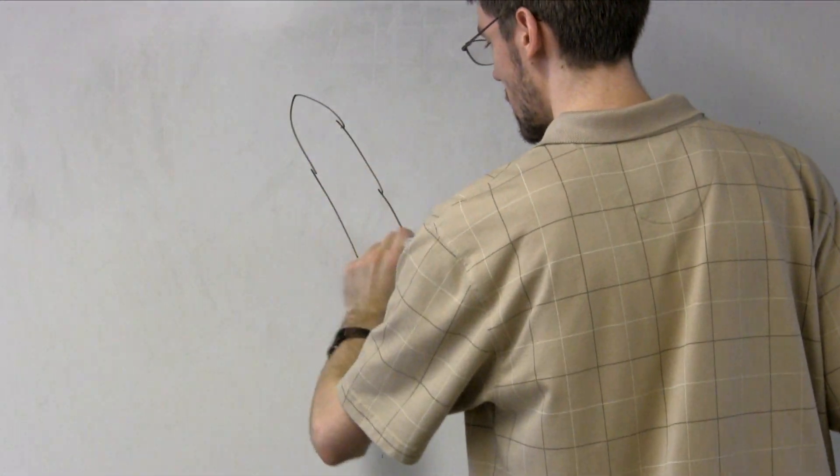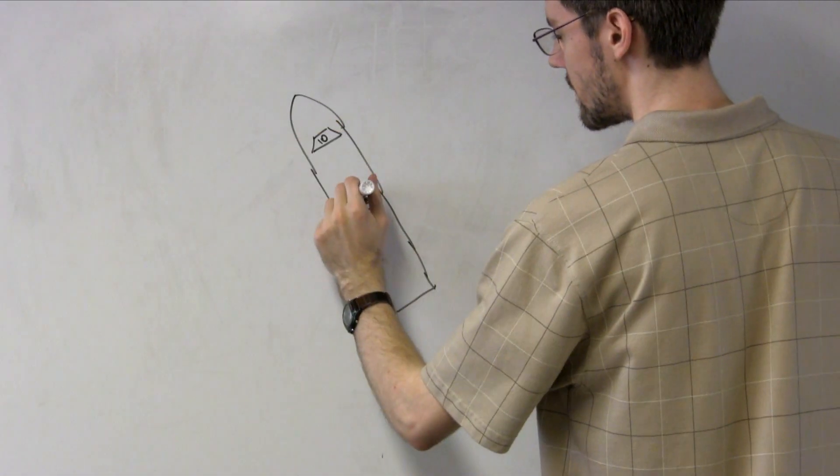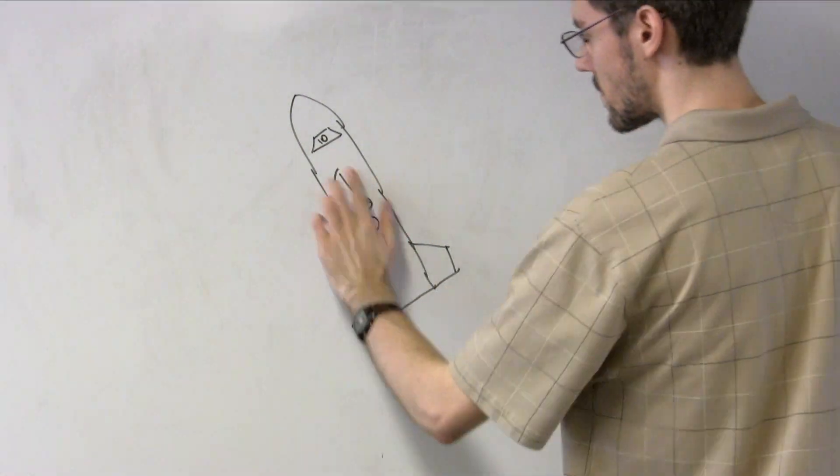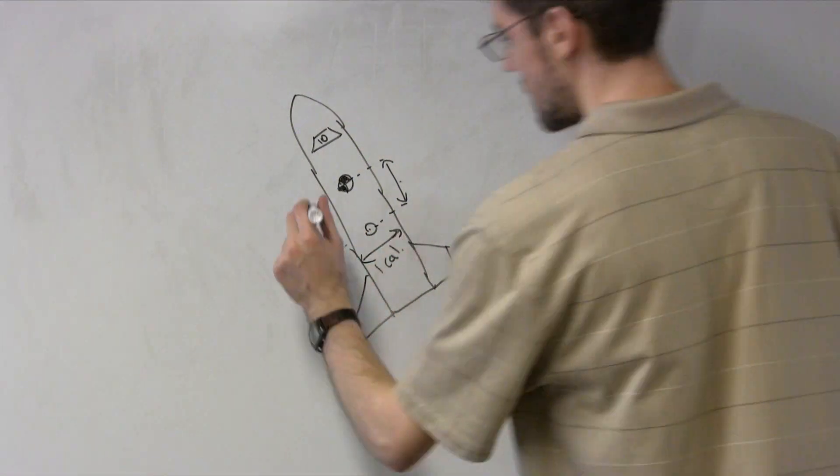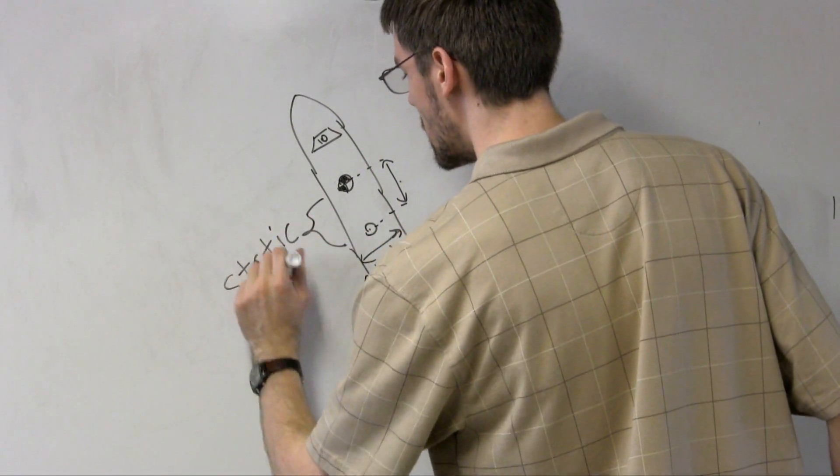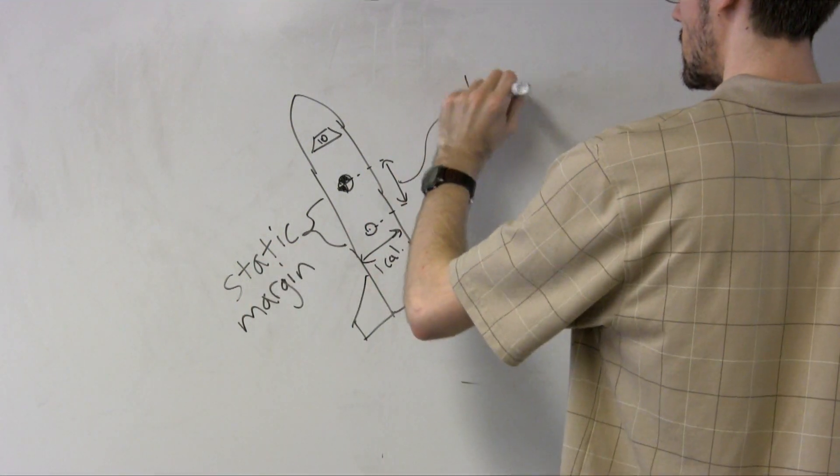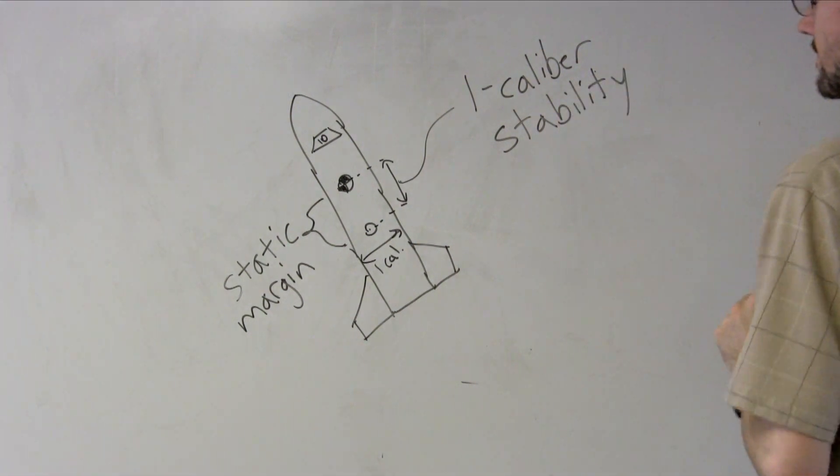This is where the rule of thumb comes from. Putting weight in the nose moves the CG forward, while putting fins at the tail moves the CP backwards. The separation between the CG and CP, the static margin, should be at least as long as the diameter of the rocket to ensure that the rocket is stable. A rocket whose static margin is equal to its diameter is said to have one caliber stability.